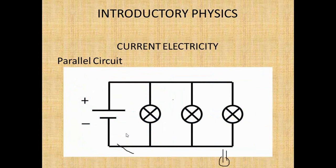If you have more bulbs in a parallel circuit, you can have one, two, three branch points with three electrical devices. We do an experiment just like with the series circuit — we have an indicator lamp and observe what happens as we add more resistors or electrical devices. Unlike the series circuit, when you add more resistors, the indicator lamp gets brighter and brighter.